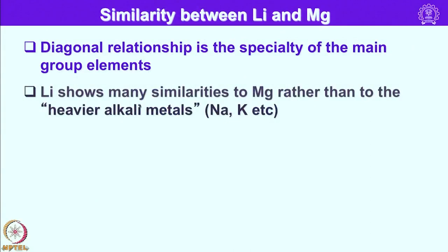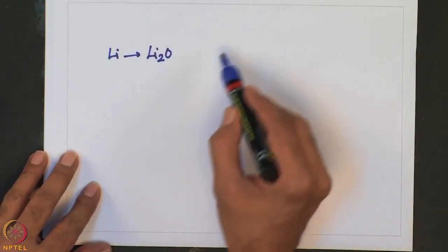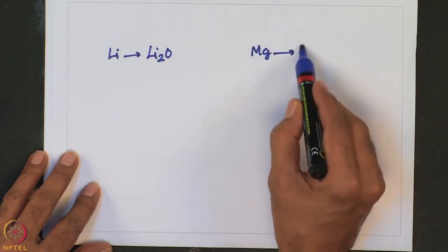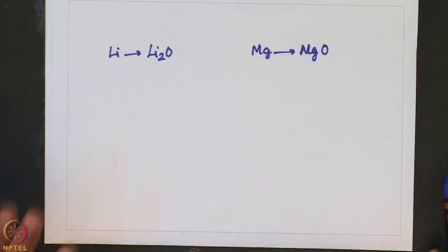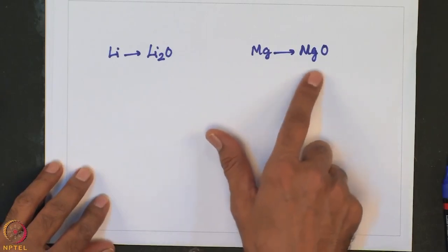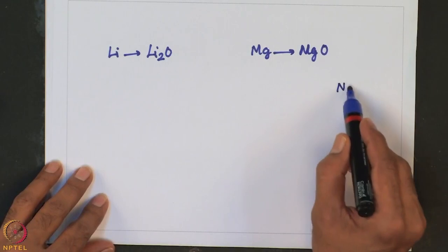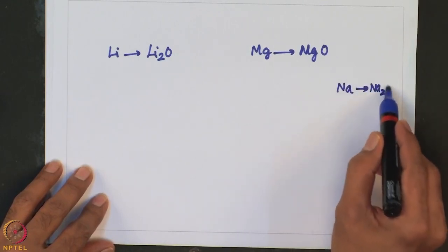Now let us look into some similarities between lithium and magnesium — this is called the diagonal relationship, comparing an element with one from the group one step down. This diagonal relationship is very important in main group elements. Lithium shows many similarities to magnesium rather than to the heavier alkali metals from its own group such as sodium and potassium. For example, lithium forms lithium oxide and similarly magnesium forms magnesium oxide — both prefer to form only oxide, not peroxide — whereas sodium forms sodium peroxide.